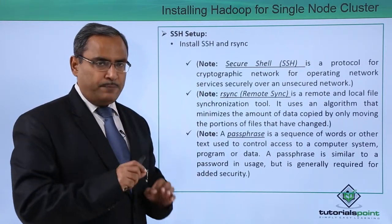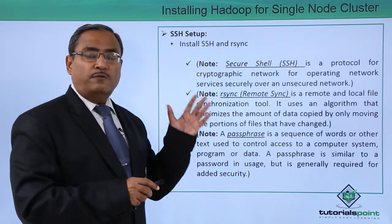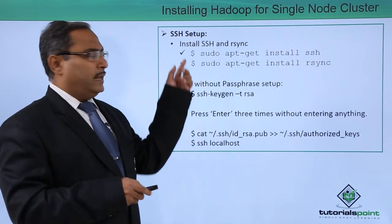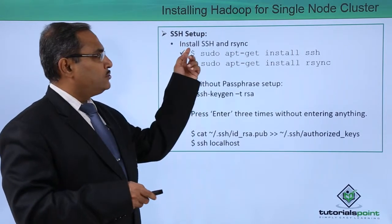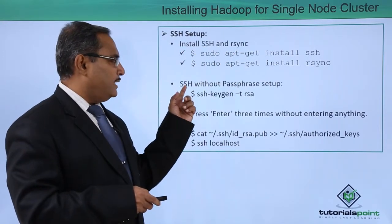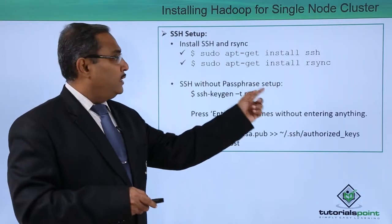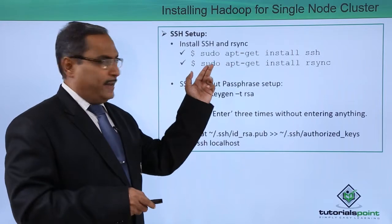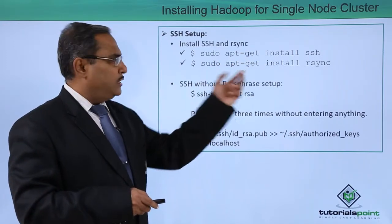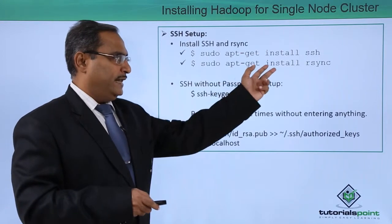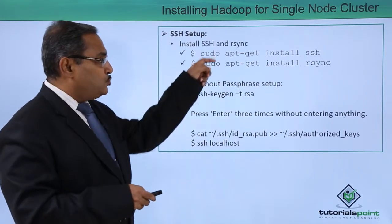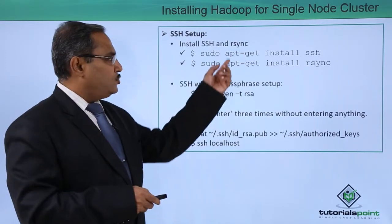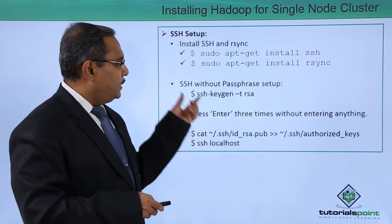Let us go step by step for the installation of Hadoop for a single node cluster. We have two operations to be done. First, install SSH and RSync, and then go for SSH without passphrase setup. To do this, we require to issue two commands: 'sudo apt-get install SSH' and then 'sudo apt-get install RSync'. These two commands are to be executed from the dollar prompt to install SSH and RSync on our system.